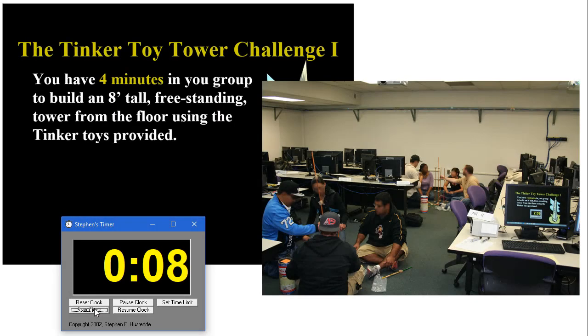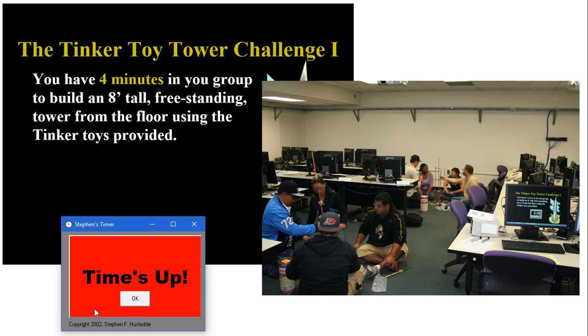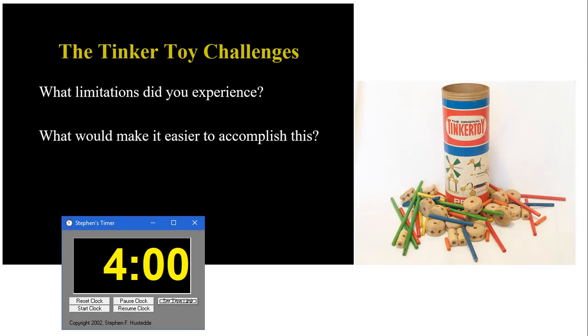So the students are building their towers, getting to know each other. And at the end of four minutes, I keep warning them of the amount of time they have left. At the end of four minutes, they hear the signal to stop. And they have to see if their towers are free standing if they're eight feet tall. And most groups cannot do it in four minutes. So we then talk about their experience and what the limitations were that they encountered. And what they would need to actually be able to accomplish this.